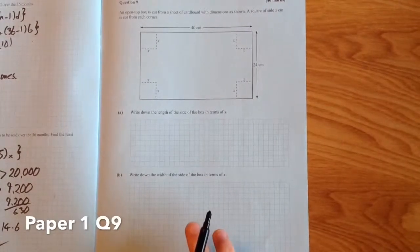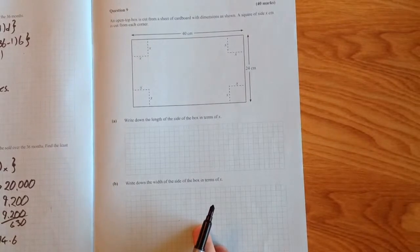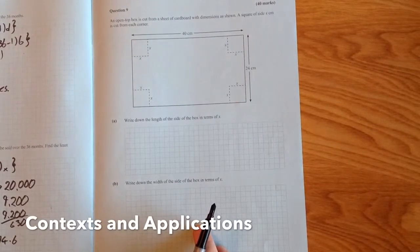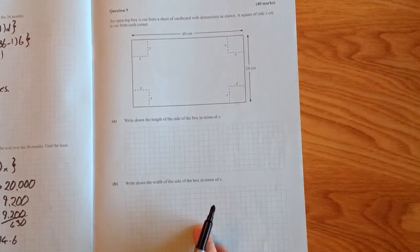Okay, so this is question 9, the last question on paper 1. It says an open top box is cut from a sheet of cardboard with dimensions as shown. A square of side x centimeters is cut from each corner.